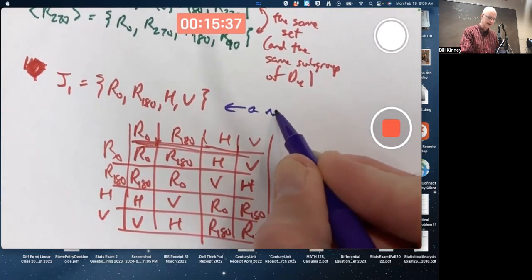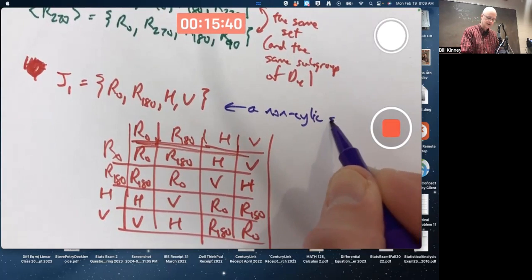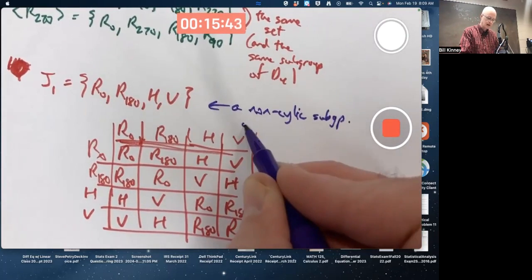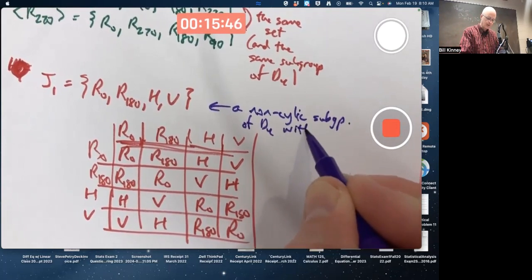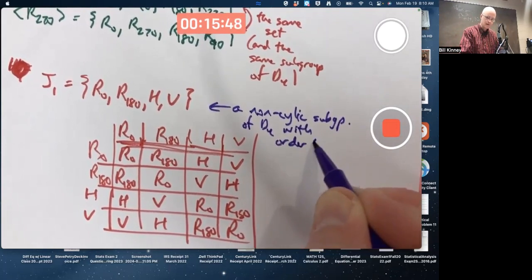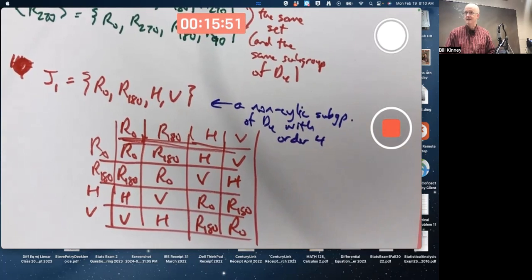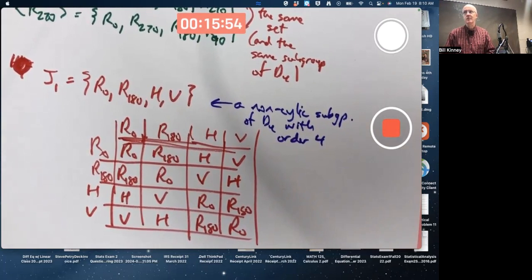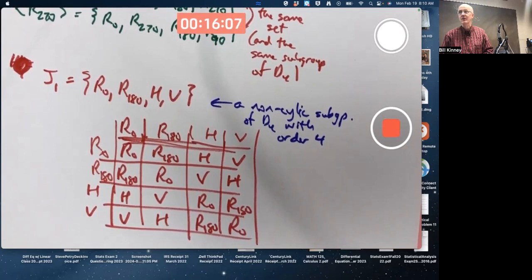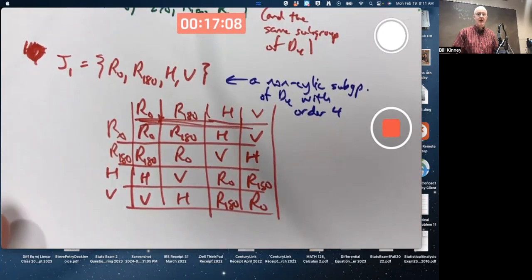As long as you've done the computations right. So that's a non-cyclic subgroup of order 4. A non-cyclic subgroup of D4 with order 4. So are there other non-cyclic subgroups of order 4? Remember, there's only one cyclic subgroup generated by R90 and R270 of order 4 is what I'm talking about. There's actually lots of cyclic subgroups, though. All the ones generated by elements of order 2 are cyclic subgroups as well. But there's only one cyclic subgroup of order 4.